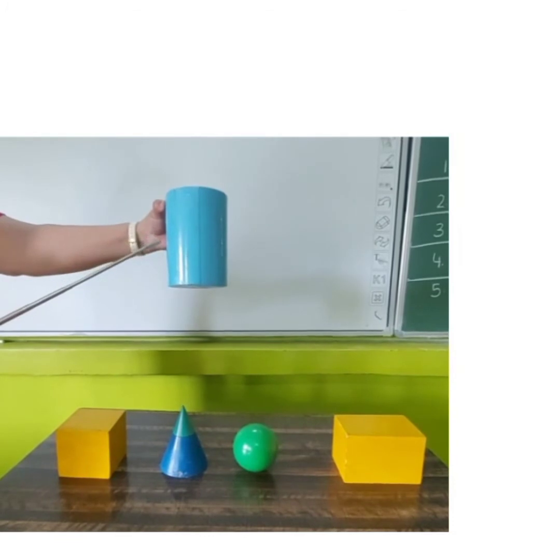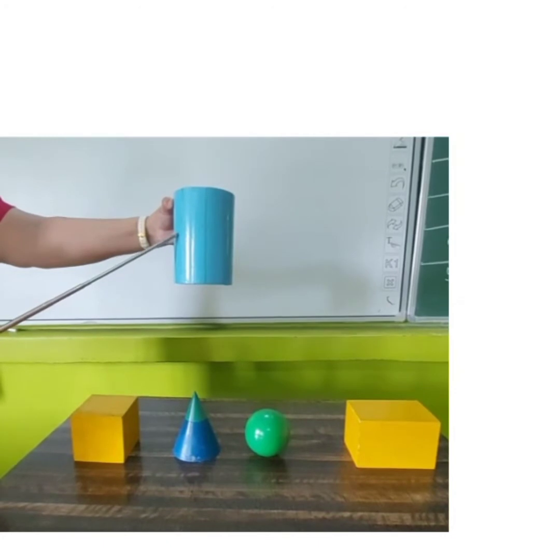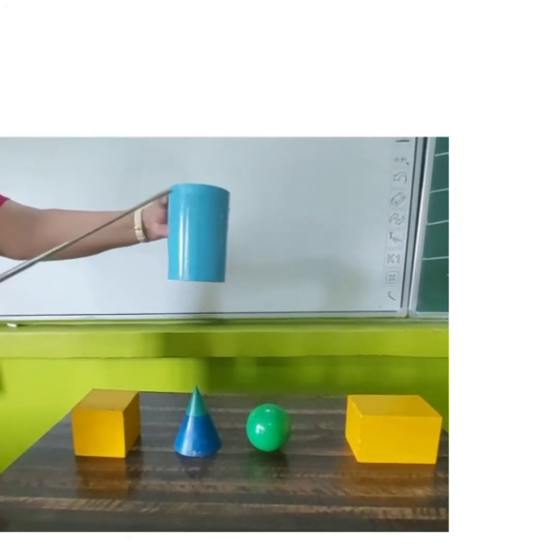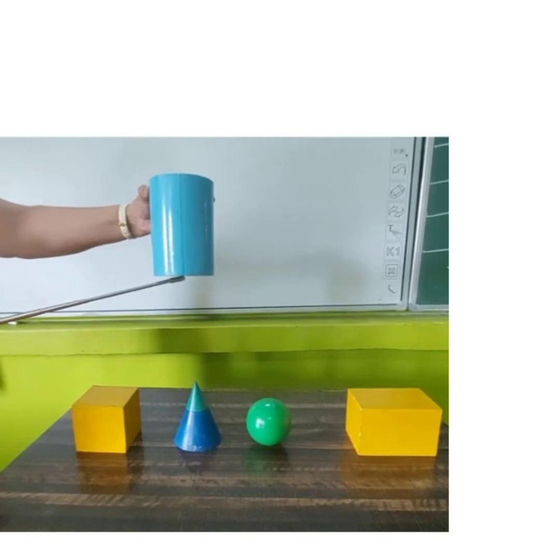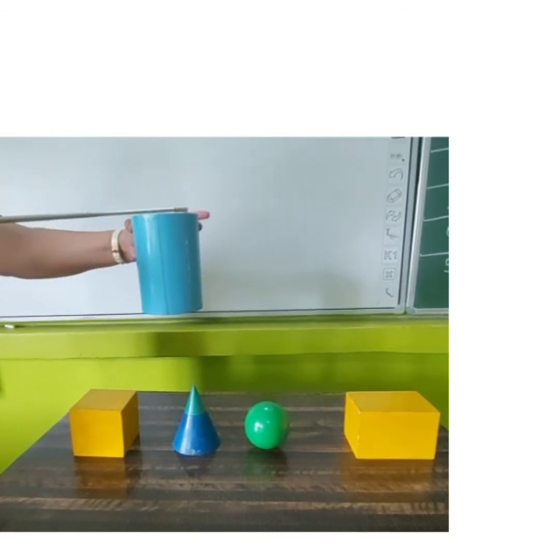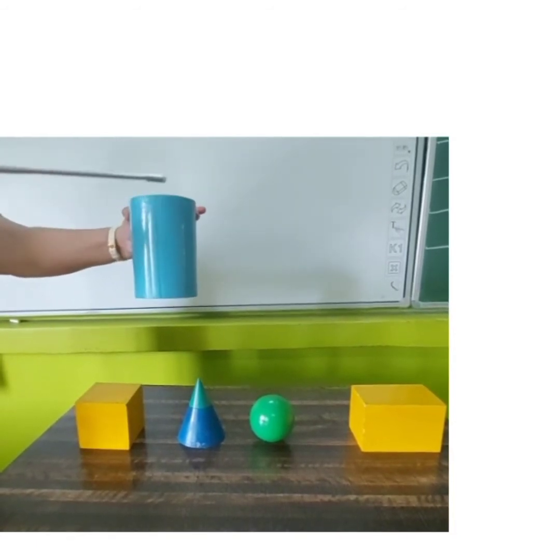Our fifth 3D shape is cylinder. It has three faces: one is the curved face and the two are the flat faces, two sides and zero corners.